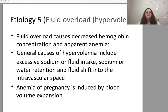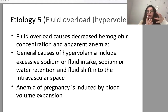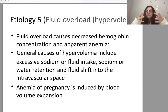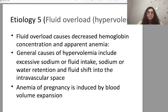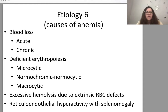Fluid overload or hypervolemia causes decreased hemoglobin concentration and apparent anemia. The actual number of erythrocytes and volume of hemoglobin may be normal, but due to fluid overload the percentage of both in solution is insufficient. General causes of hypervolemia include excessive sodium or fluid intake, sodium and water retention, and fluid shift into the intravascular space. Anemia of pregnancy is induced by blood volume expansion.